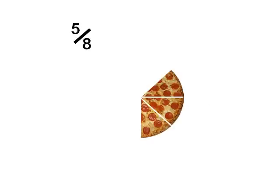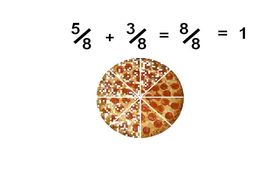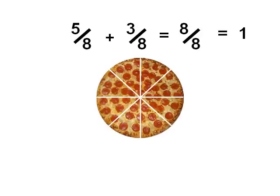When you add five eighths plus three eighths, it equals eight eighths. So that is the basics of fractions. Now let's see how we can convert them into decimals.